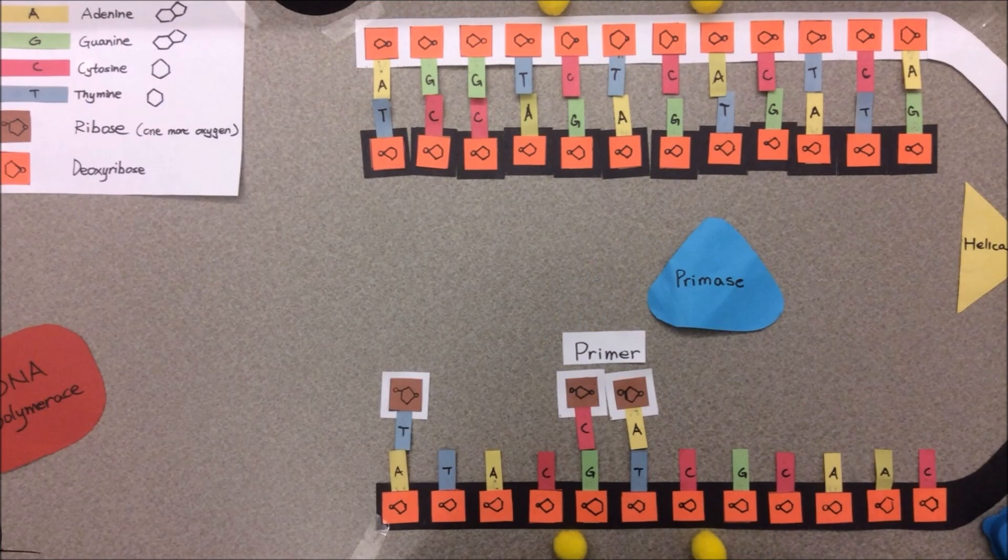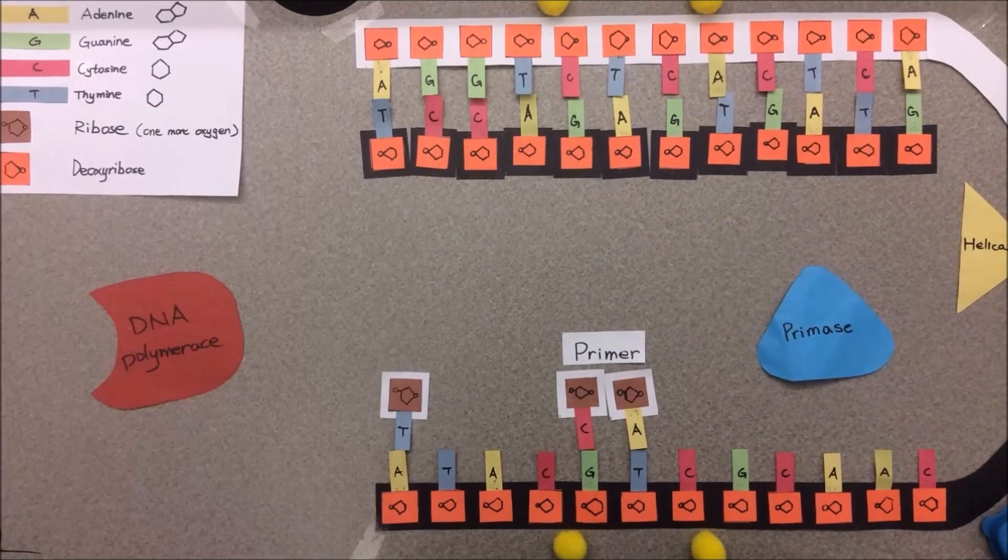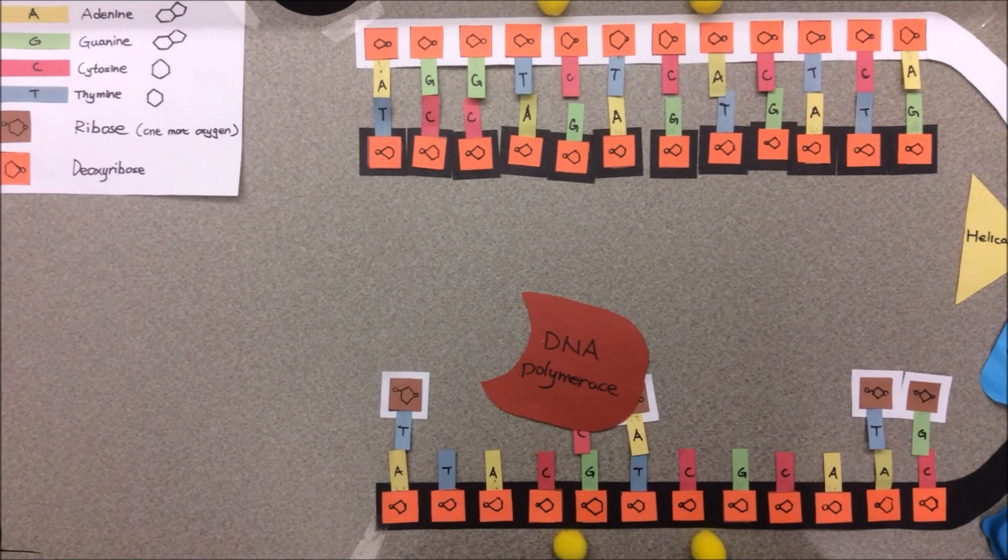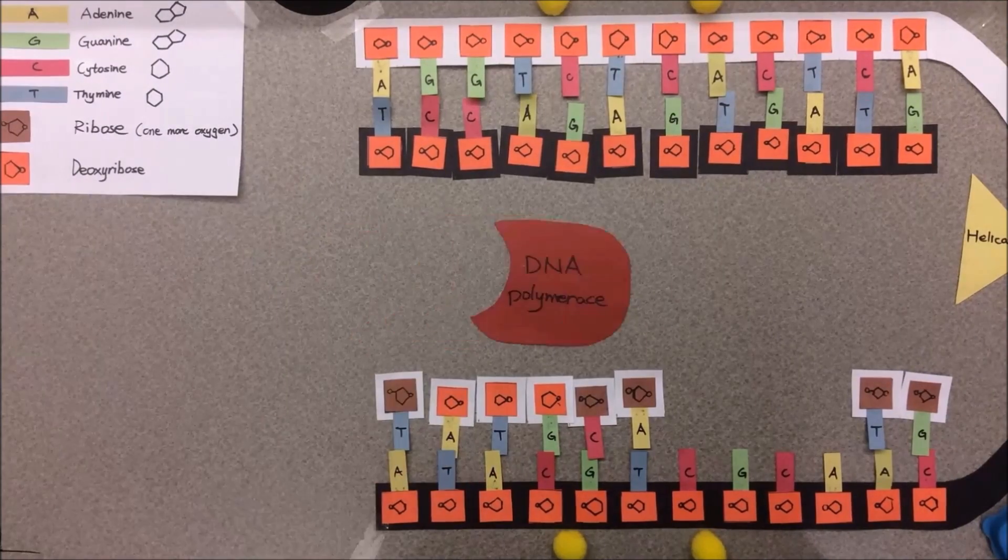For the lagging strand, numerous primers are produced by the primase and are bound to various points along the lagging strand. Another DNA polymerase binds onto the lagging strand and creates new DNA from the ends of each RNA primer. These are called the Okazaki fragments.